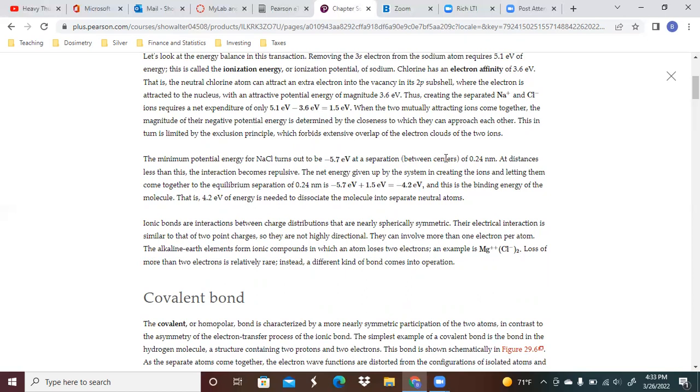The minimum potential energy for NaCl turns out to be minus 5.7 eV at a separation of 0.24 nanometers. At distances less than this, the interaction becomes repulsive. The net energy given up by the system in creating the ions and letting them come together to the equilibrium